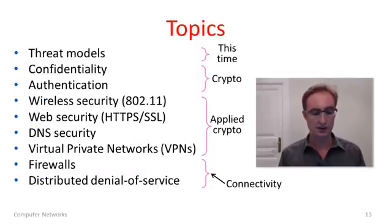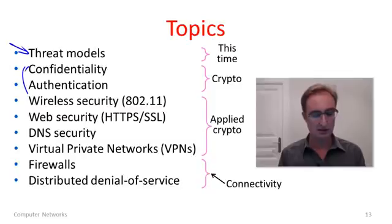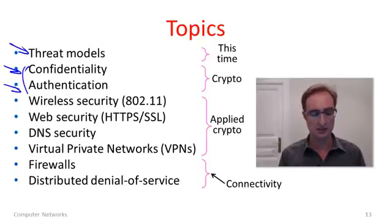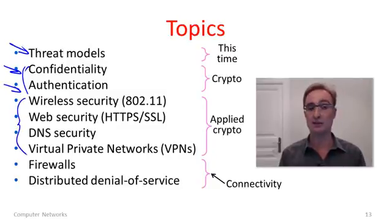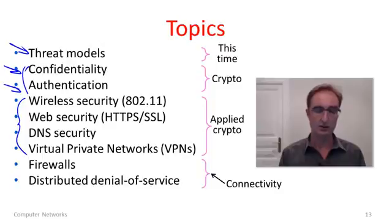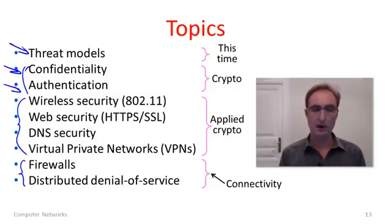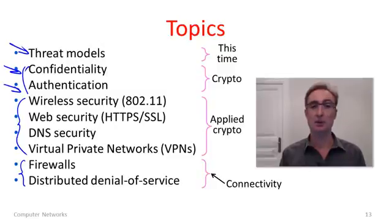So that's our introduction. We've talked about threat models, and next we're going to cover our introduction to cryptography and talk about how you can provide confidentiality and authentication of messages. After that, we'll go through various material showing how crypto is applied at different layers — securing 802.11, securing the web, DNS, and new constructs like virtual private networks. We'll also see security problems that have little to do with crypto, such as firewalls and distributed denial of service attacks, which are really more about preserving connectivity properties.